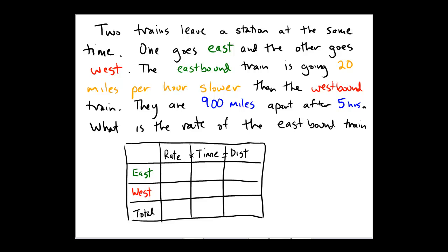Here we will solve a distance equals rate times time problem. Imagine we have two trains that leave a station at the same time. One train goes east and the other goes west.